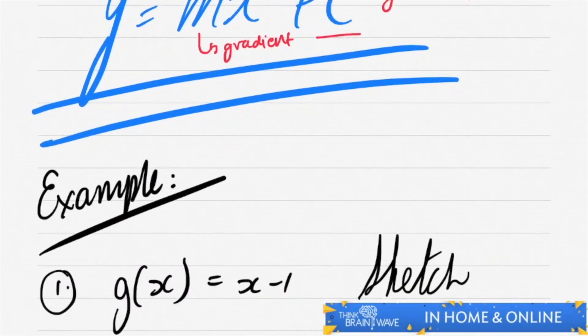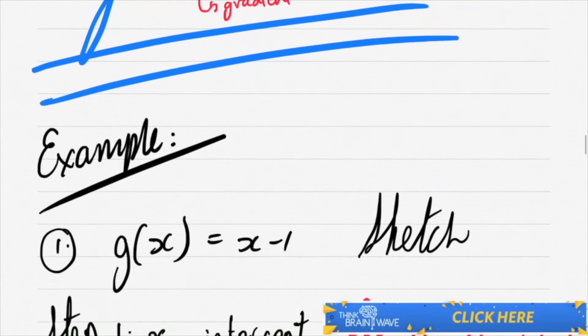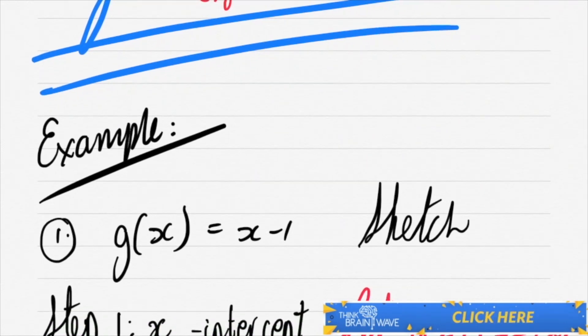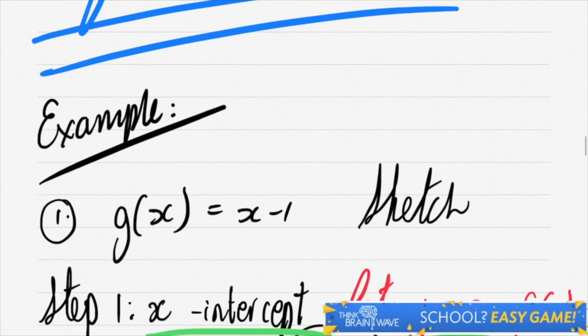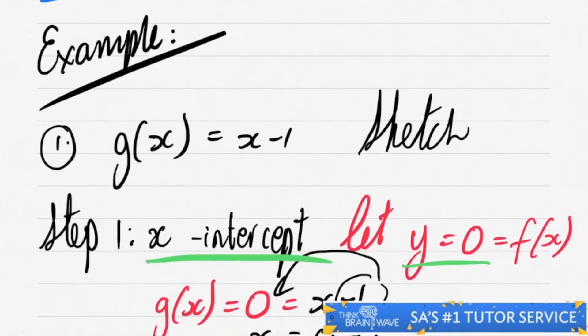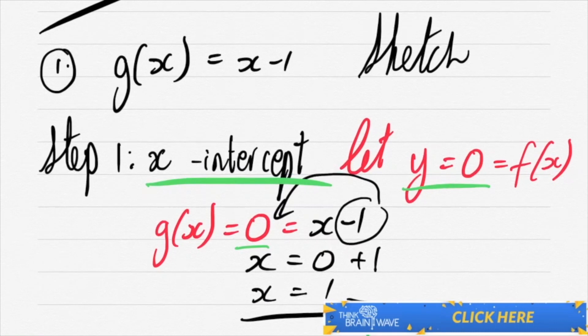Just an example. If you've got g(x) = x - 1, let's sketch this. Step 1 is your x-intercept. In this case, whenever you want to look for your x-intercept, you make your y = 0. So here we have 0 = x - 1. We take our minus 1 across to the left hand side leaving us with x = 0 + 1 and there's our answer.